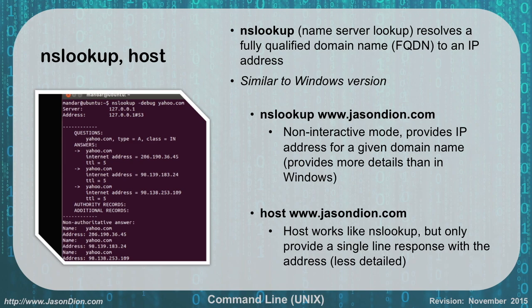NSLookup works just like it did in Windows, with a non-interactive mode or an interactive mode. Additionally, we have the HOST command, which does the same thing as NSLookup but gives you a single one-line answer. Typing 'host jasondion.com' will return a single response with the IP address. With NSLookup, you can find more details such as MX records and A records. In the example, we can see the A record for Yahoo, showing their internet address along with authoritative and non-authoritative servers.